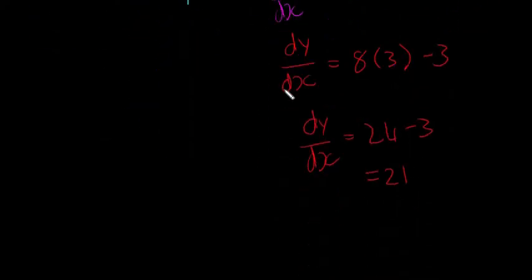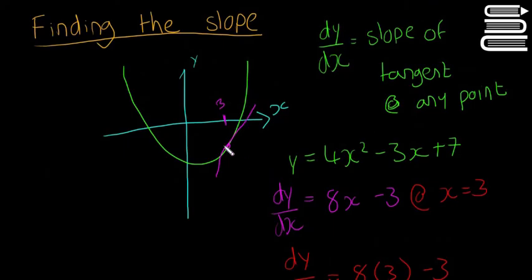So the slope of this tangent here, the pink one at x equals 3, is 21. And that tells us a lot about the curve, how much it's changing and stuff like that, which will become more apparent when we're talking about more applied topics. We won't be talking about just curves, it'll be talking about maybe the speed of something.